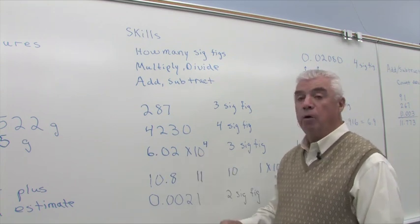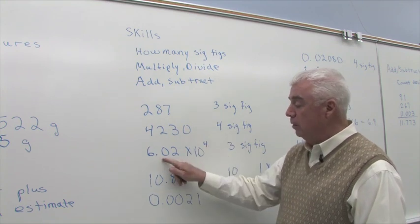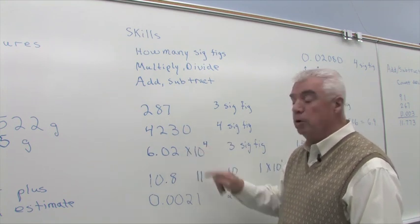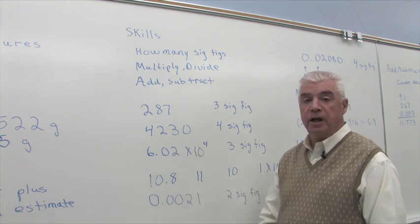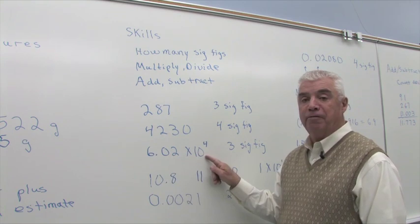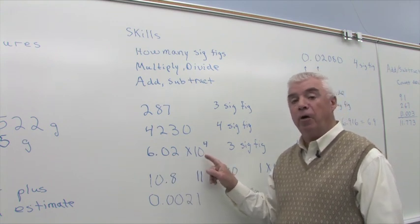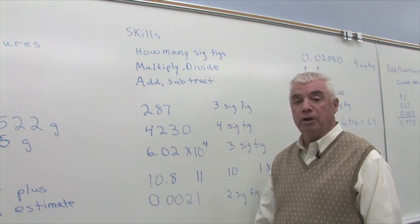We could multiply that out, and if we move the decimal four places to the right, 1, 2, there'd be two more zeros there, a total of five digits then. You might be tempted to say that there are five significant figures here. But that's an error. We only count, again, the 6, the 0, and the 2.